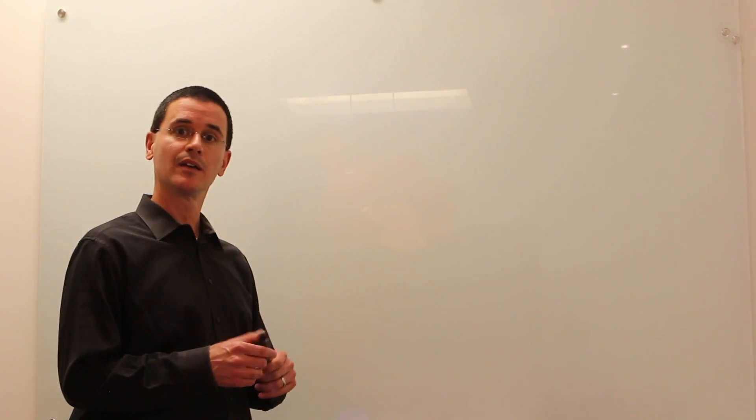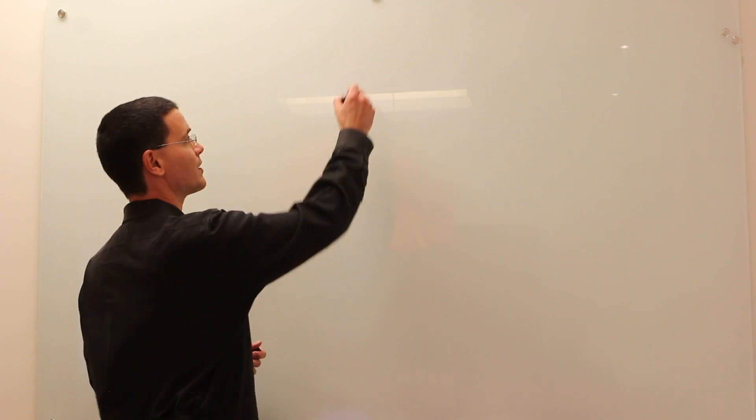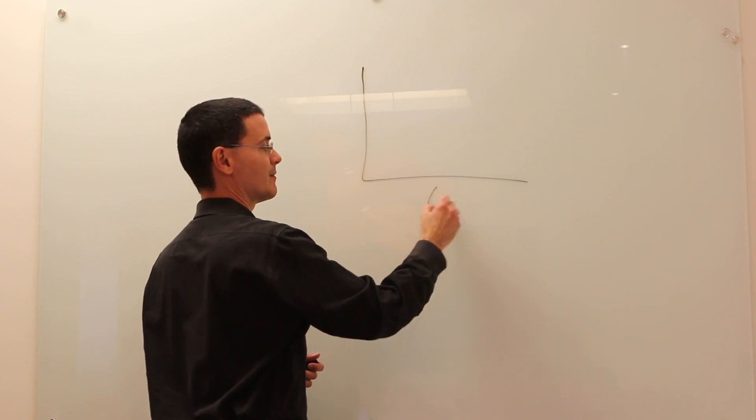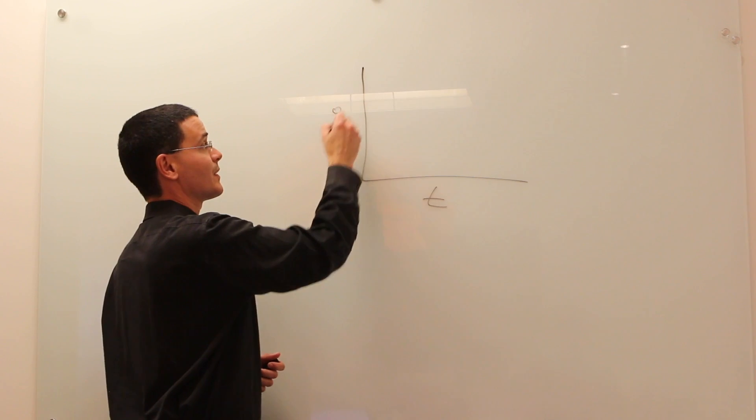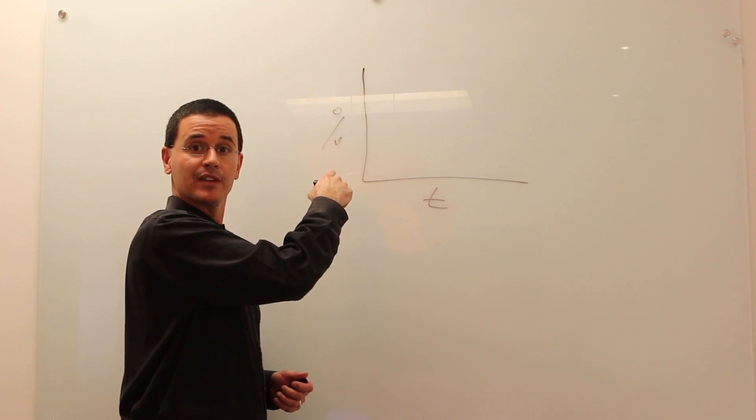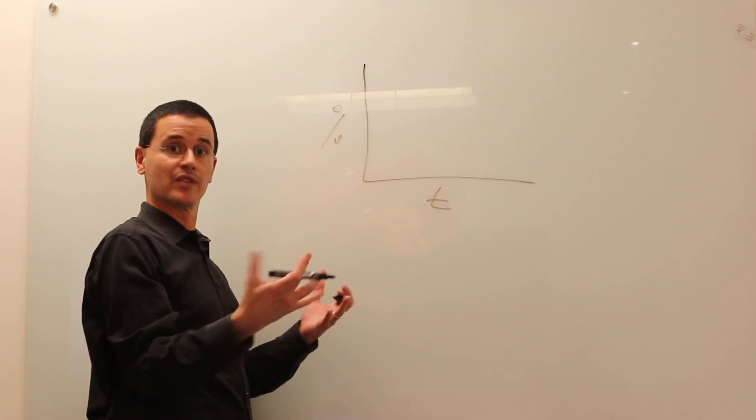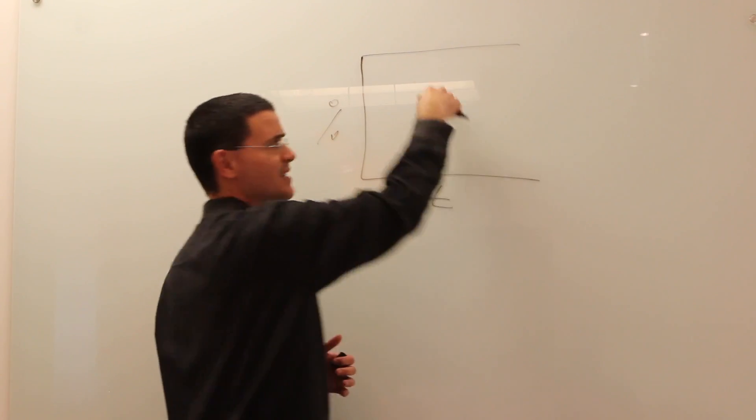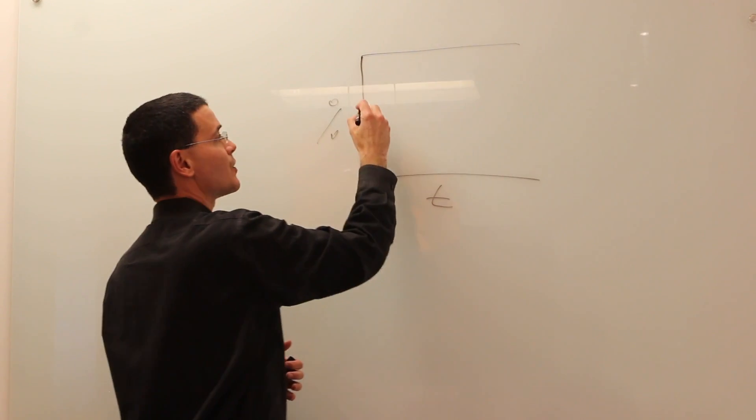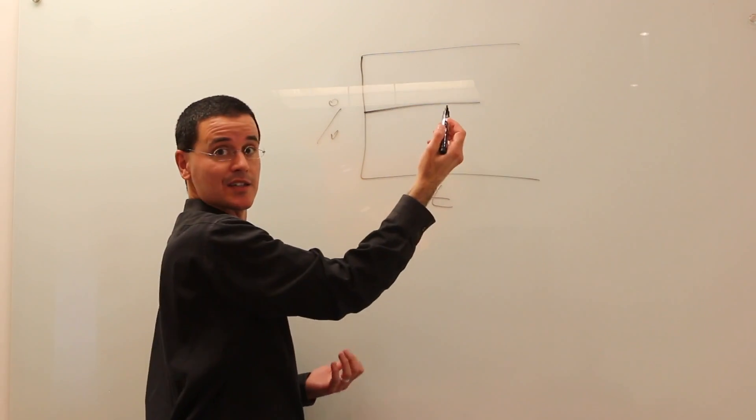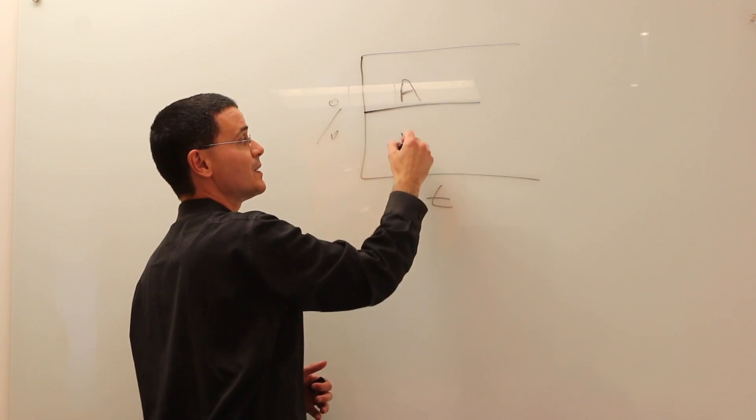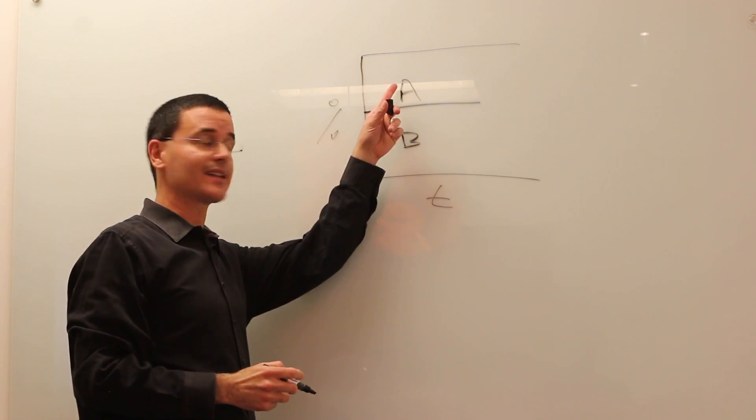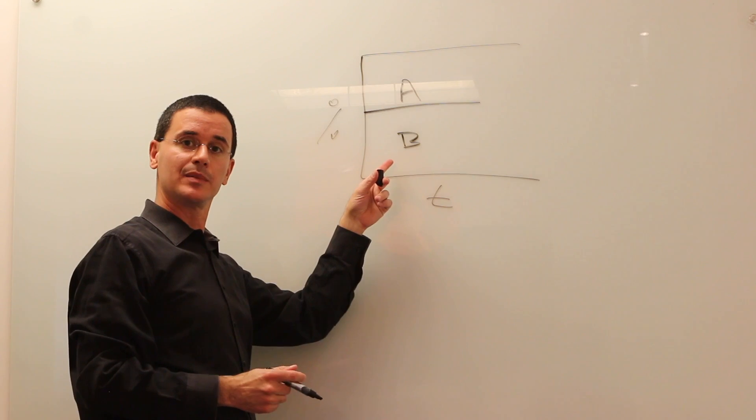If I have two ideas I want to test using an A-B testing system, here's what that might look like. Here's time. Here's the percent of traffic going to each of my two variations. Let's say this is 100%. While the test is running, I'll watch the system allocate half of my traffic to A and half to B.